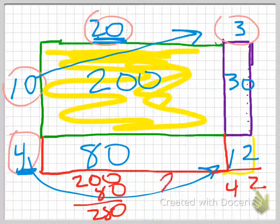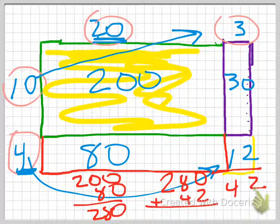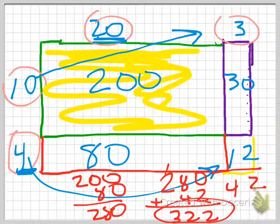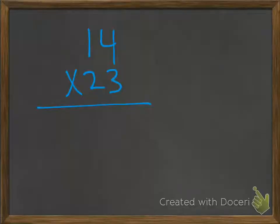Add that together: 280 plus 42, and we get 322. And that's our answer. And that was used in an array.